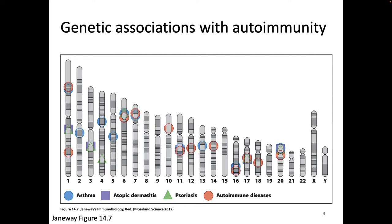When we do different types of studies, we can find a number of genetic associations in populations with autoimmune diseases. Here you can see all the human chromosomes, with marks for regions that have been statistically associated with different diseases. Some regions might be related to just asthma, while others seem to be related to many diseases. You can see some overlapping hits right there on chromosome six.